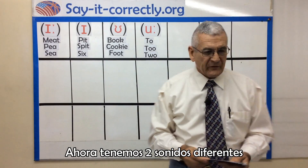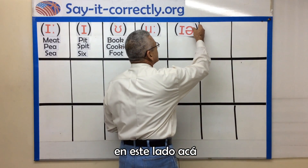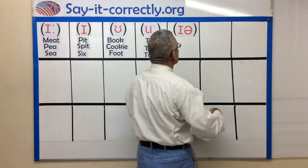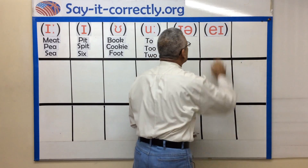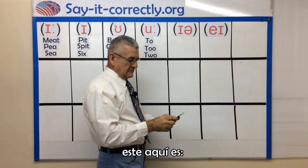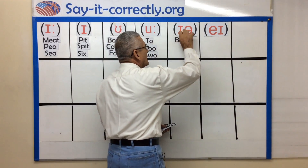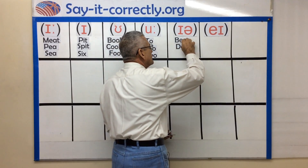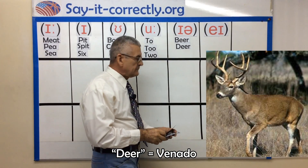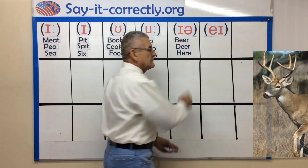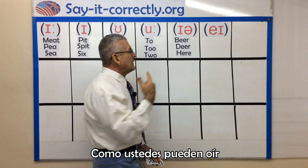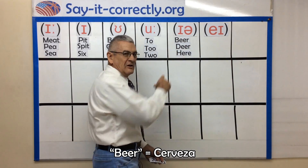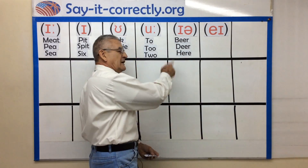Now we have two different sounds on this side. This one here — bear, beer, deer, and hear. As you can hear, the R barely sounds: beer, deer, hear.